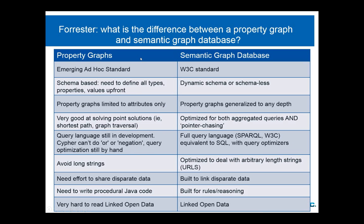That was about our property graphs generalizing to any depth. Let me take a step back and look at this comparison table. When we asked Forrester about the differences, we went through this entire list. Property graphs have an emerging ad hoc standard, the Blueprints API, while we have a W3C standard. The advantage of the W3C standard is that if you are fed up with the triple store you're using, you can dump out all your data as triples and read it into any other database.